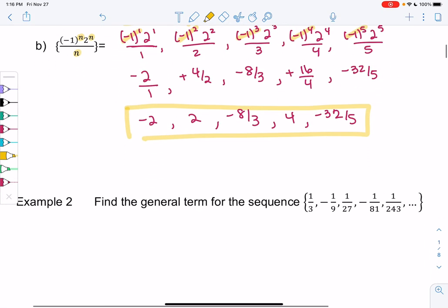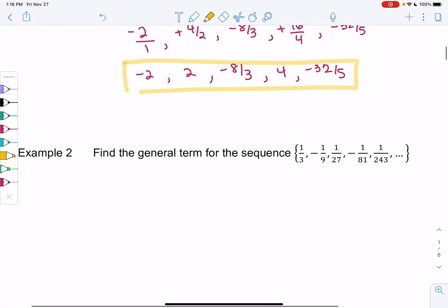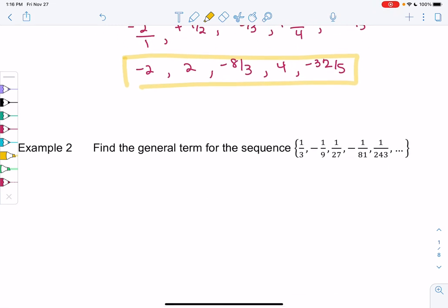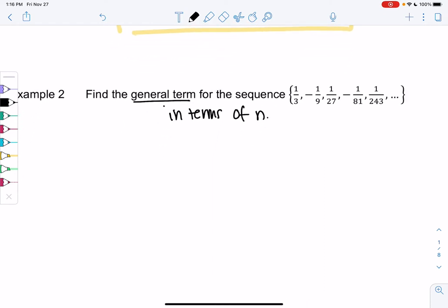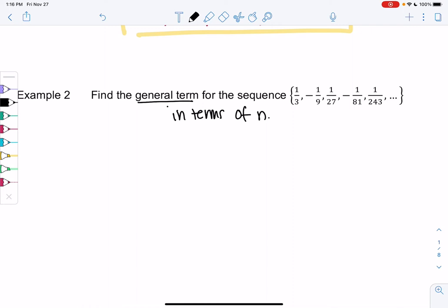Let's try finding the general formula now. So now I have a sequence: 1 third, negative 1 ninth, 1 over 27, negative 1 over 81, 1 over 243. And we want to find the general term. So we want to find an equation in terms of n. So there's two things I notice going on here. I notice we have positive and negative terms. So that means we'll have some sort of negative 1 to some power in the formula, because that's what's going to make it switch from positive to negative. And then I also notice powers of 3 in the denominator: 3, 9, 27.